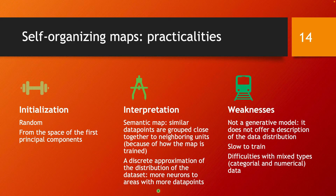Self-organizing maps also offer a discrete approximation of the distribution of the dataset. More neurons are allocated to areas where there are more data points, giving you a visualization of the data distribution in 2D — which is very attractive and may have been very difficult to achieve in the original high-dimensional space.